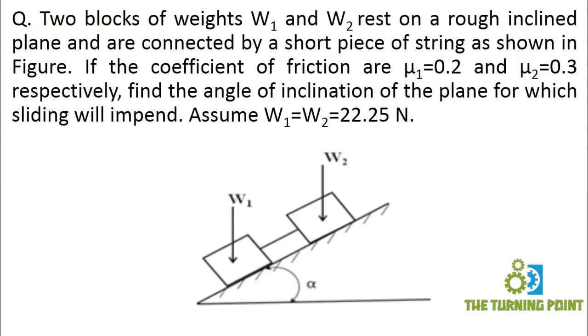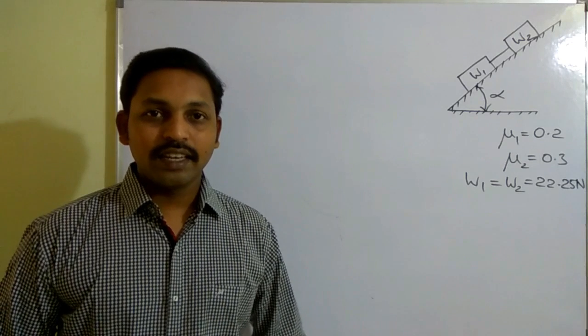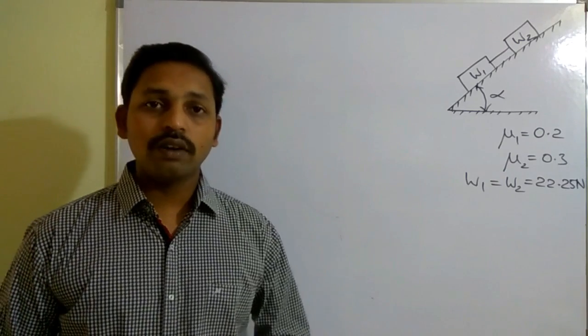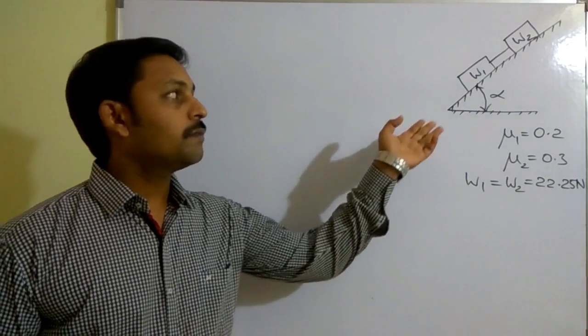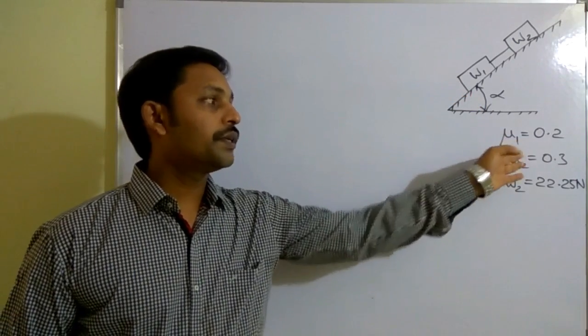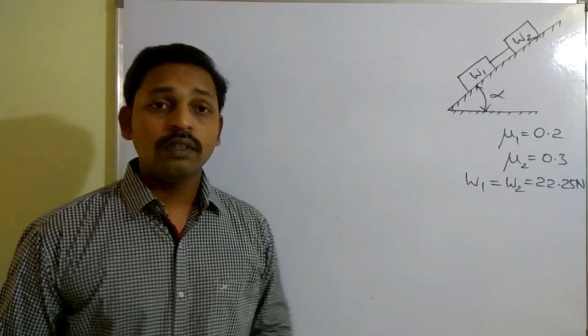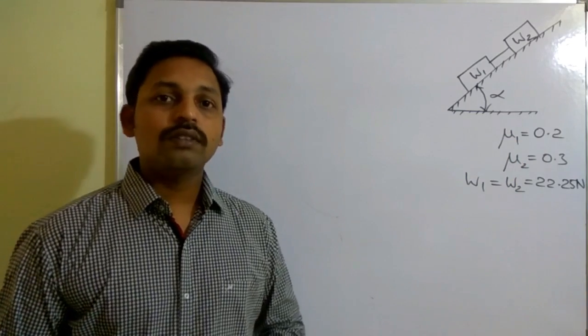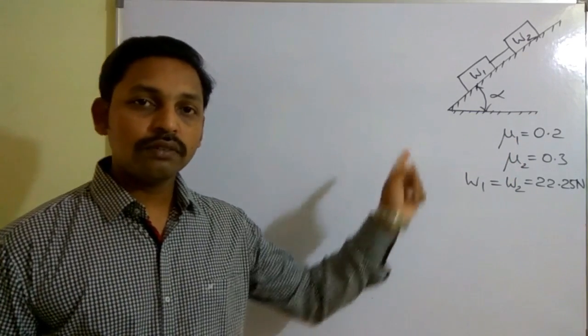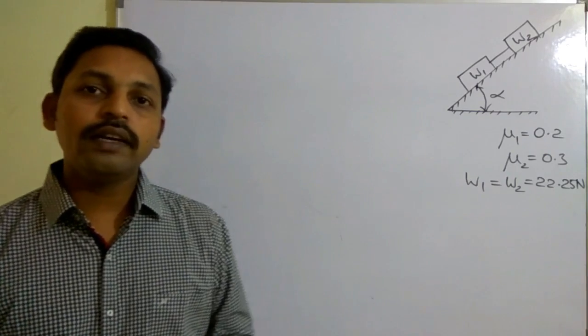Hello everyone, welcome to the Turning Point. In this session, let us solve a problem on friction. The given question is: there are two blocks on an inclined plane — one has a coefficient of friction of 0.2 and another has a coefficient of friction of 0.3 with the surface. The weight of both blocks are similar and they are connected by means of a piece of string as shown in the figure. You are supposed to calculate the angle.